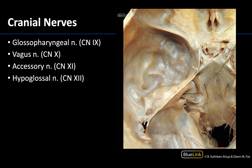Recall that the glossopharyngeal, vagus, and accessory nerves will exit the skull via the jugular foramen along with the internal jugular vein. It's really difficult to tell which one is which in this region, so we would not ask you to identify the glossopharyngeal or vagus there. However, you can identify the accessory nerve because it ascends through the foramen magnum before heading to the jugular foramen to exit the skull. Any nerve traversing both the foramen magnum and the jugular foramen is the accessory nerve.